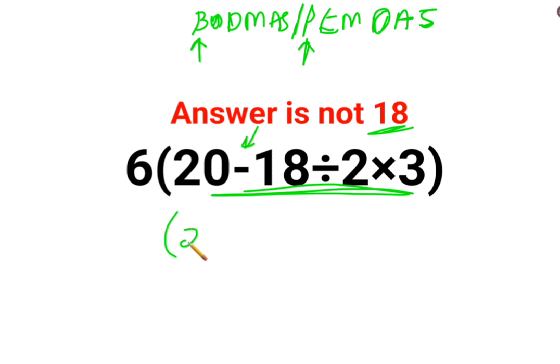So first we will keep 20 minus sign as it is. Then a lot of people think that division and multiplication - here people think division holds higher precedence.